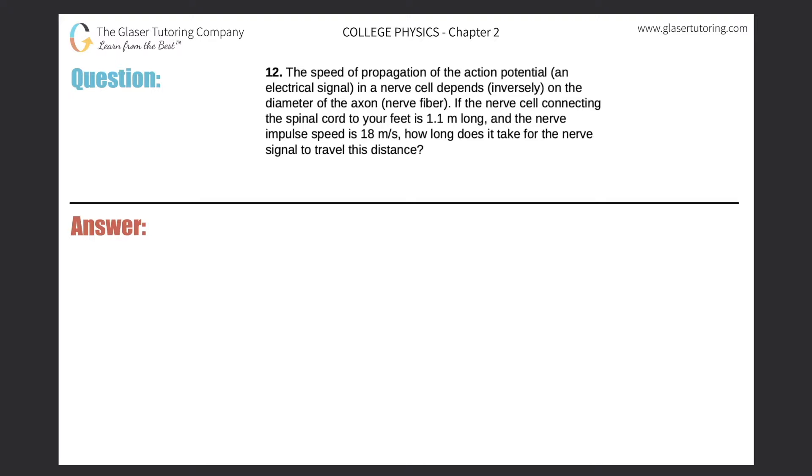Number 12: The speed of propagation of the action potential, an electrical signal in a nerve cell, depends inversely on the diameter of the axon, the nerve fiber. If the nerve cell connecting the spinal cord to your feet is 1.1 meters long and the nerve impulse speed is 18 meters per second, how long does it take for the nerve signal to travel this distance?